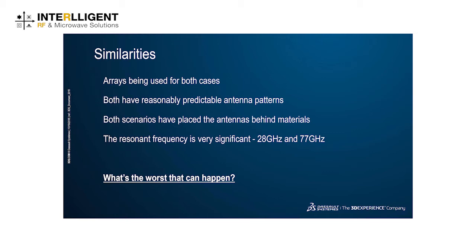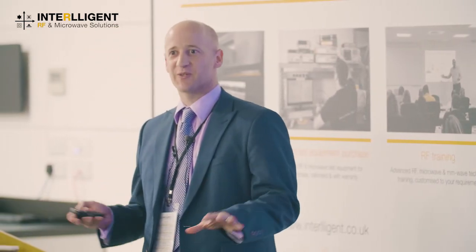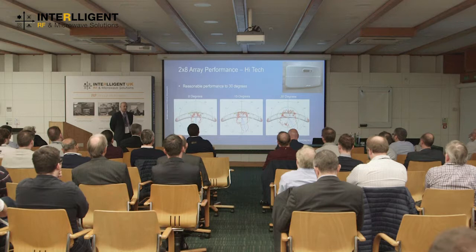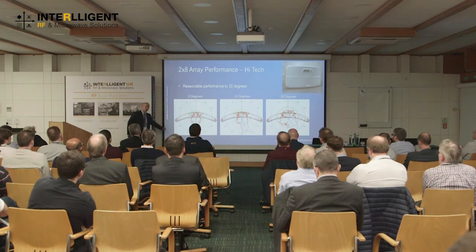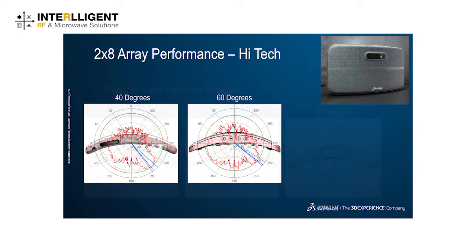So, what could go wrong? When you place it behind materials, you need to take that into account. The 2x8 array at 0 degrees gives a nice far-field pattern — that's fine. When you scan across to 15 degrees, that's still not too bad. At 30 degrees, we're getting a bit ragged. At 40 degrees, if I asked you what antenna gave you that pattern, you'd say 'are you sure that's an antenna?' That does not look like an antenna. And if I showed you the one at 60 degrees, I'd probably have to find myself a new job.